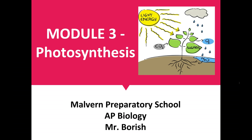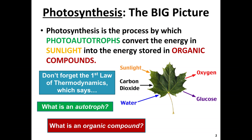Hi everyone. I was going to record the lectures from the J-term. This will be a series of two lectures on module 3 for photosynthesis. I'm going to start with the big idea in terms of what is photosynthesis. Photosynthesis is basically the process by which organisms known as photoautotrophs can convert energy that comes in the form of sunlight or light into energy that's stored in organic compounds.